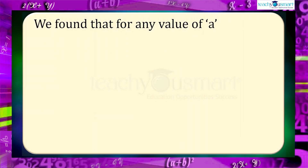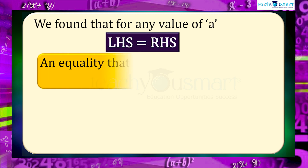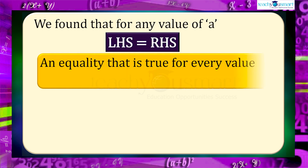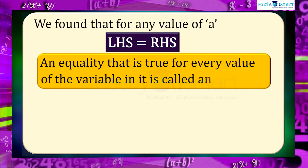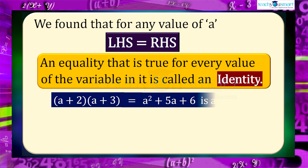We found that for any value of a, LHS equals RHS. An equality that is true for every value of the variable in it is called an identity. So we can say that the equality (a+2)(a+3) = a² + 5a + 6 is an identity.